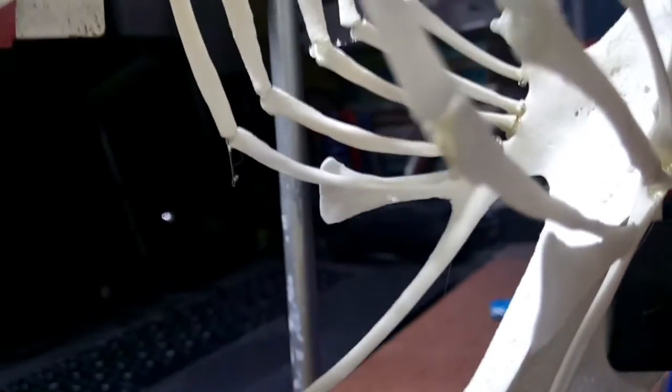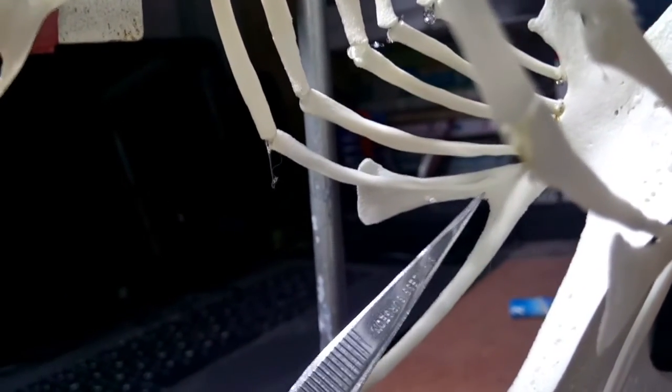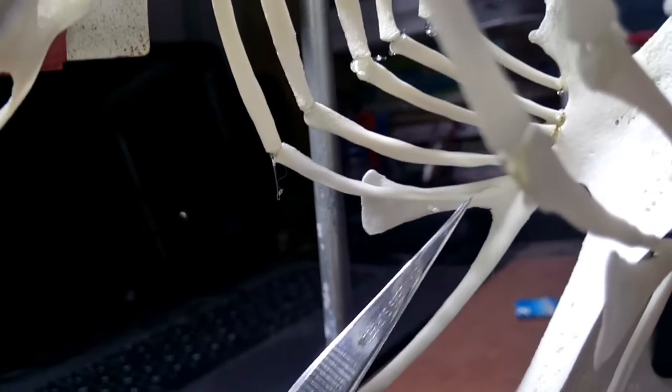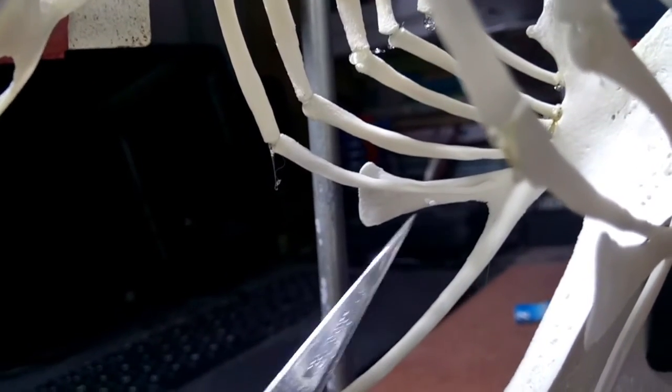In some chickens, from what I've read, the last sternal rib touches the sternum. In the case of this skeleton, the fifth rib does not touch the sternum and is sort of free-hanging.